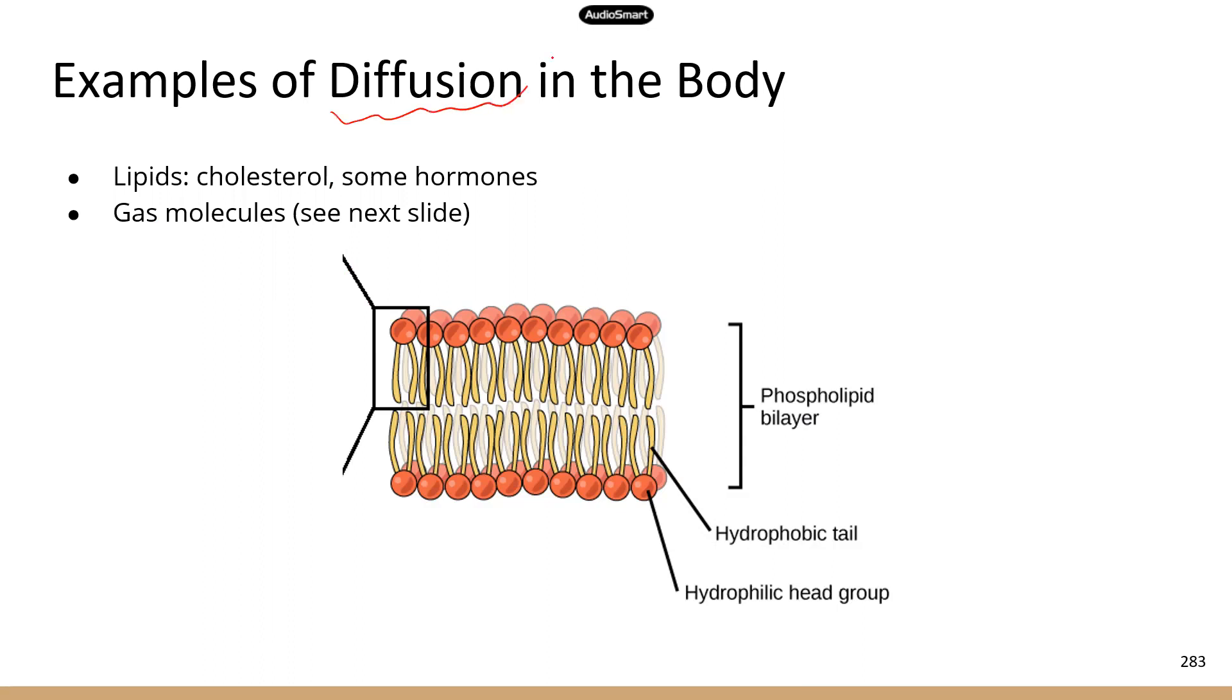There are some common molecules that definitely diffuse across the cell membranes. I only have two groups of molecules here, but of course there's more. So the first group of molecules that perform simple diffusion in our body is lipids: cholesterol, some hormones, lipid-based hormones like sex hormones secreted by the testes and ovaries.